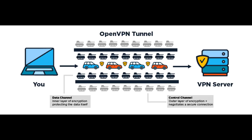Number 5: OpenVPN. OpenVPN is an open source VPN that is useful for creating Point-to-Point and Site-to-Site connections. It uses a custom security protocol based on SSL and TLS protocol.